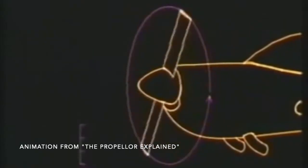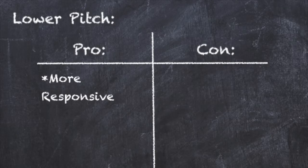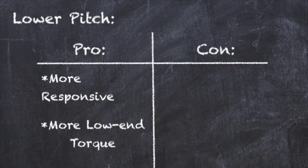Physically, this measurement means that the propeller would travel 4.3 inches through the air in one rotation. Lower pitch blades are more responsive and generate more low-end torque, but generally sacrifice on thrust and top-end speeds.